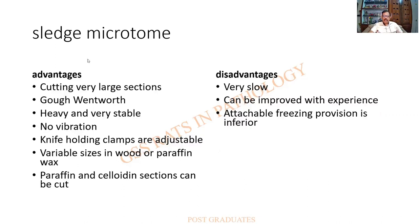Advantages of the sledge microtome: very large sections can be cut — it was first used by Gough and Wentworth in demonstrating emphysema specimens of the entire lung. It is heavy, very stable, with no vibrations. Knife-holding clamps are adjustable, and varying sizes can be cut in wood or paraffin wax. Both paraffin and celloidin embedded sections can be used.